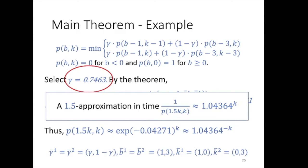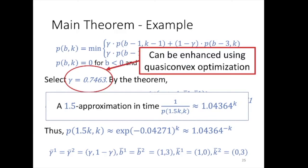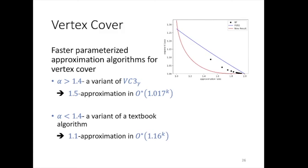The value of gamma came from optimizing: the problem of finding gamma such that the maximum branching number is minimized is itself a quasi-convex problem, so we can just plug it into our computer and get a number. Using these ideas of randomized branching along with the formula to solve the recurrence, we obtain parameterized approximation algorithms for vertex cover — for example, for 1.5-approximation the best running time we obtained is 1.017 to the power of k.